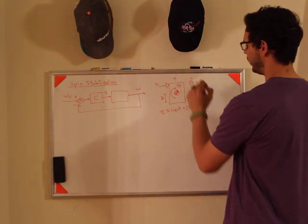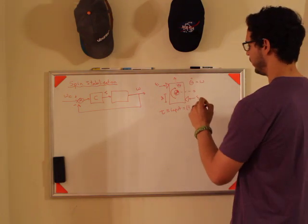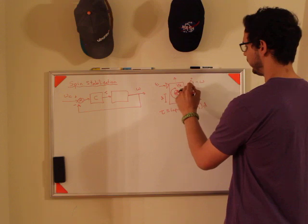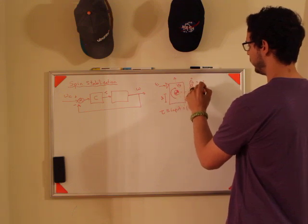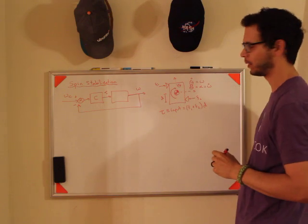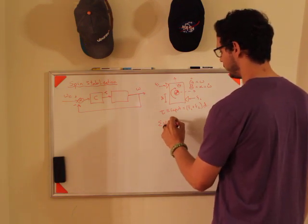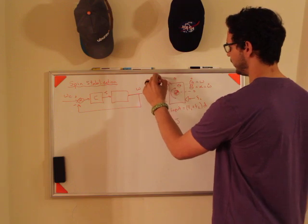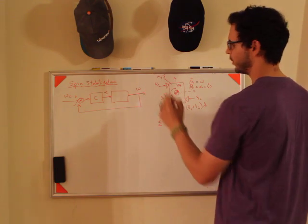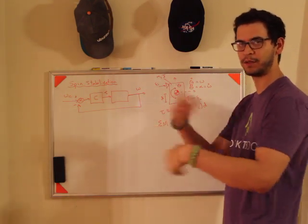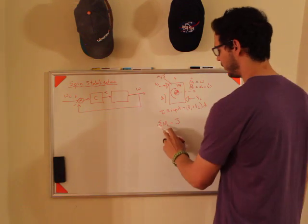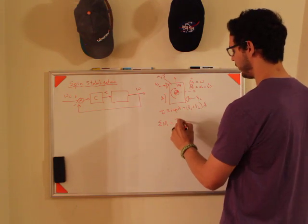Theta dot is then omega. And then the angular acceleration, theta double dot, is alpha, which is also omega dot. The equations of motion for this system, you write the sum of the moments equals the inertia. So I'm assuming this has some mass and some inertia, moment of inertia about this rotational axis. Sum of the moments is equal to J times the angular acceleration alpha.